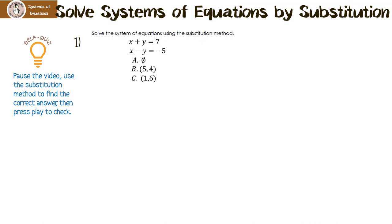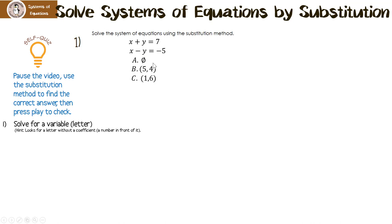Here's the self-quiz. Pause the video, use the substitution method to find the correct answer, then press play to check. The first thing we have to do is solve for an x or a y. I have 1x and 1y in the first equation, and 1x and negative 1y in the second. I decide to take the first equation and solve for y: subtract x from both sides and get y equals negative x plus 7.